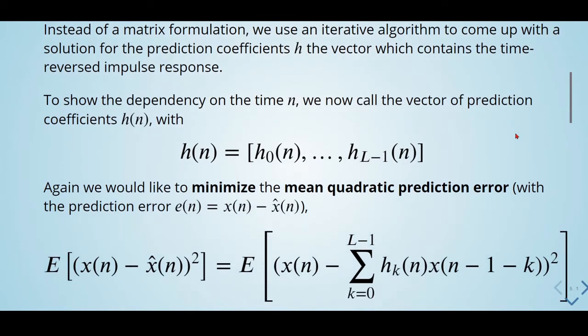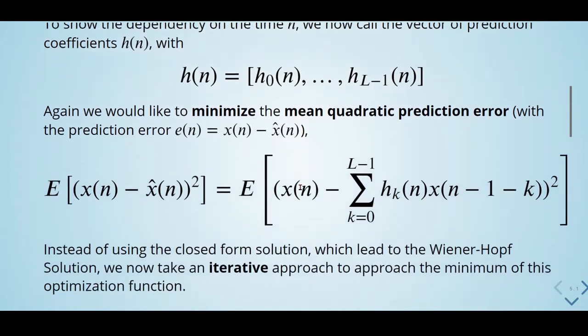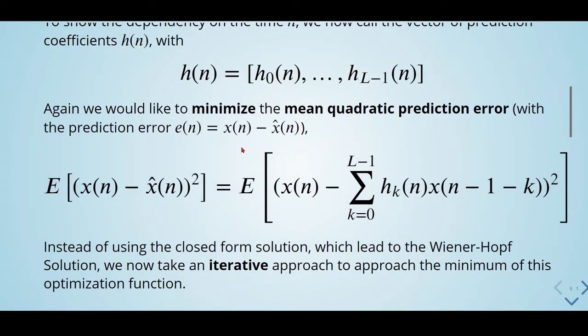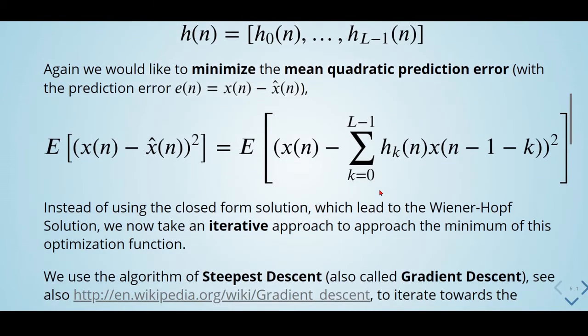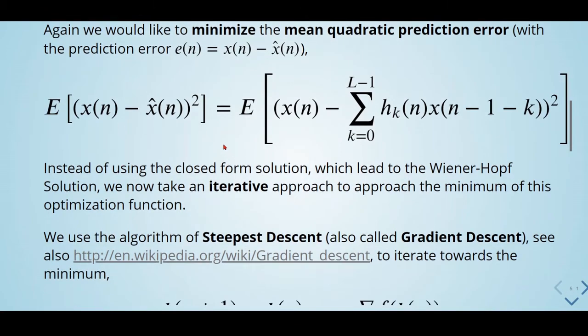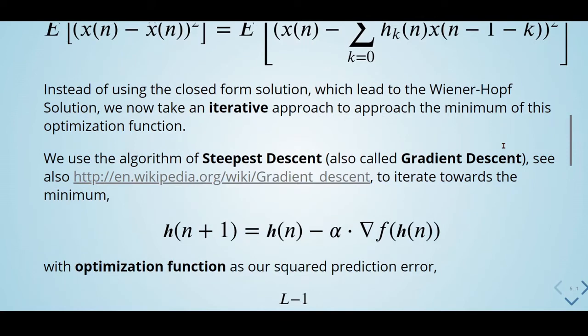Again, we would like to minimize the mean-quadratic prediction error with the original signal minus the predicted. Instead of using the closed-form solution, which leads to the Wiener-Hopf solution, we now take an iterative approach to approach the minimum of this optimization function. We use the algorithm of steepest descent, also called gradient descent, to iterate towards the minimum.